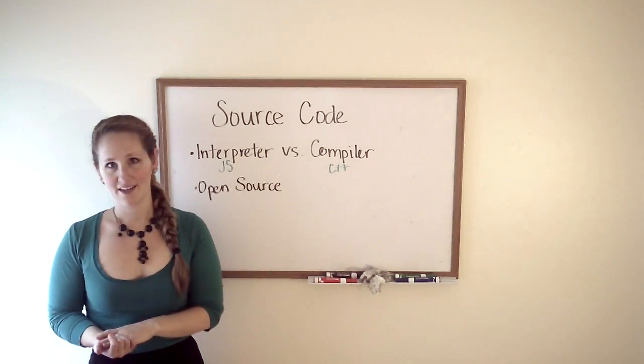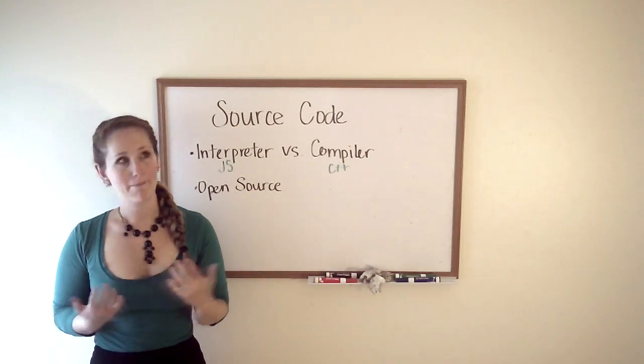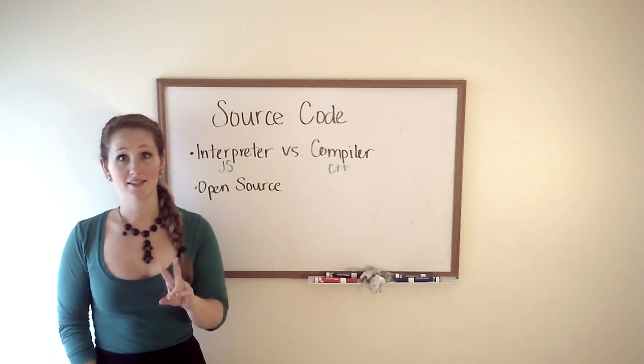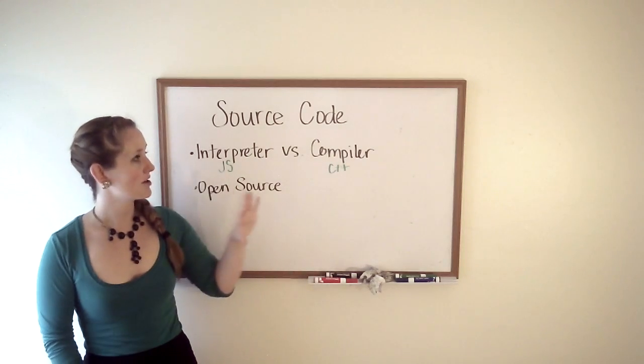Now, the computer has to have a way of interpreting that and making something really powerful run from it. There are two main ways this is done, either an interpreter or a compiler.